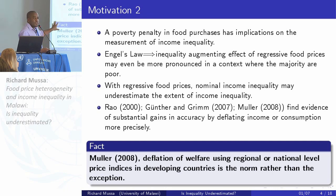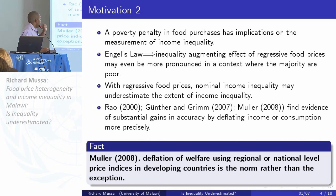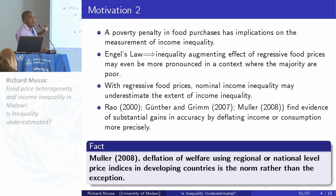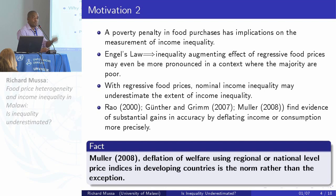To sum up what we see in the literature, as Mueller says, deflation of welfare using regional or national level prices in developing countries is the norm rather than the exception. This fails to capture the poverty penalty in the food market. What I do in this paper is re-examine inequality measures in Malawi, taking into account the possibility that households may face a food penalty — a poverty penalty. The current practice is that national statistics deflate consumption expenditure using regional CPI, which doesn't account for income-dependent food prices.